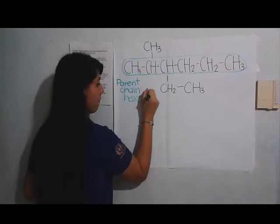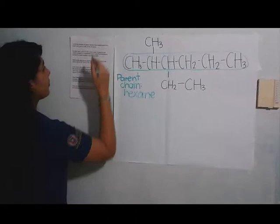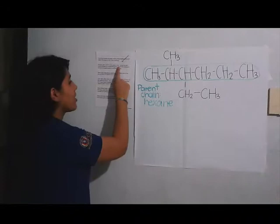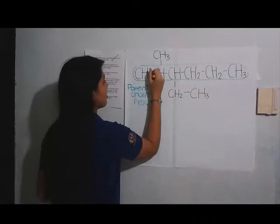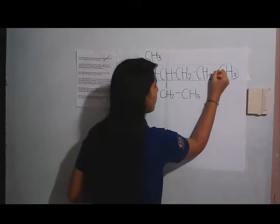For the second step, we number the carbons in the parent chain, starting at the end carbon closest to the substituent group, to give all substituent groups the lowest position numbers possible. Here the carbons are numbered one, two, three, four, five, and six.